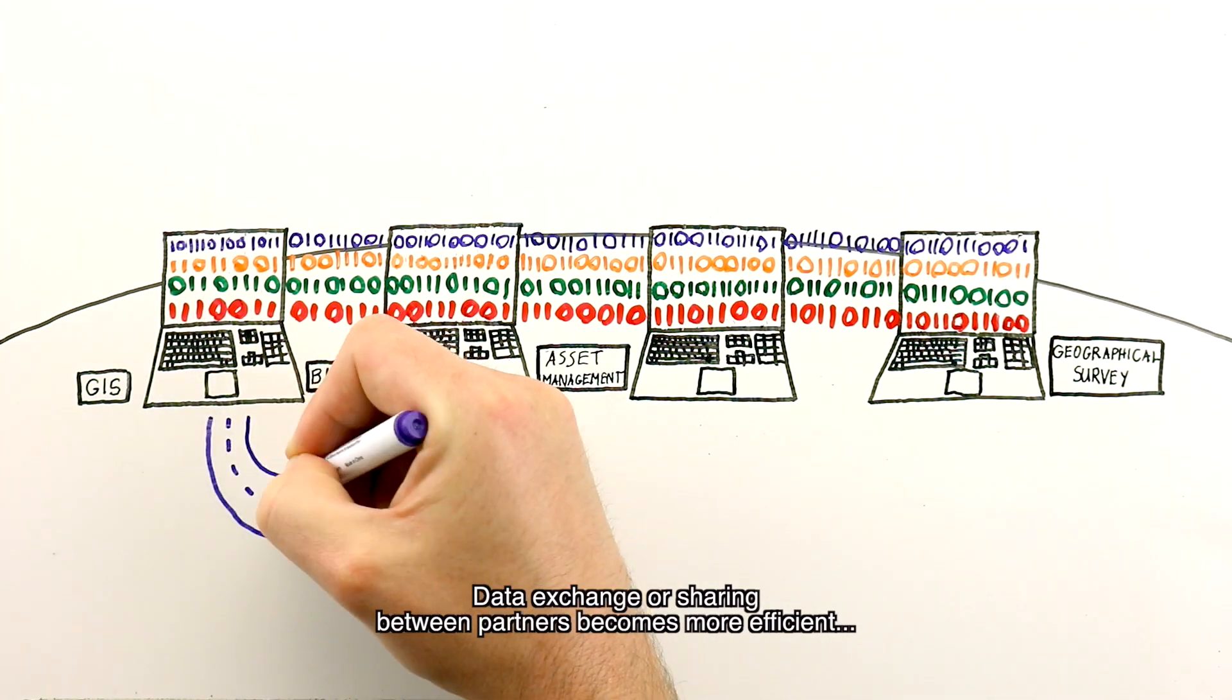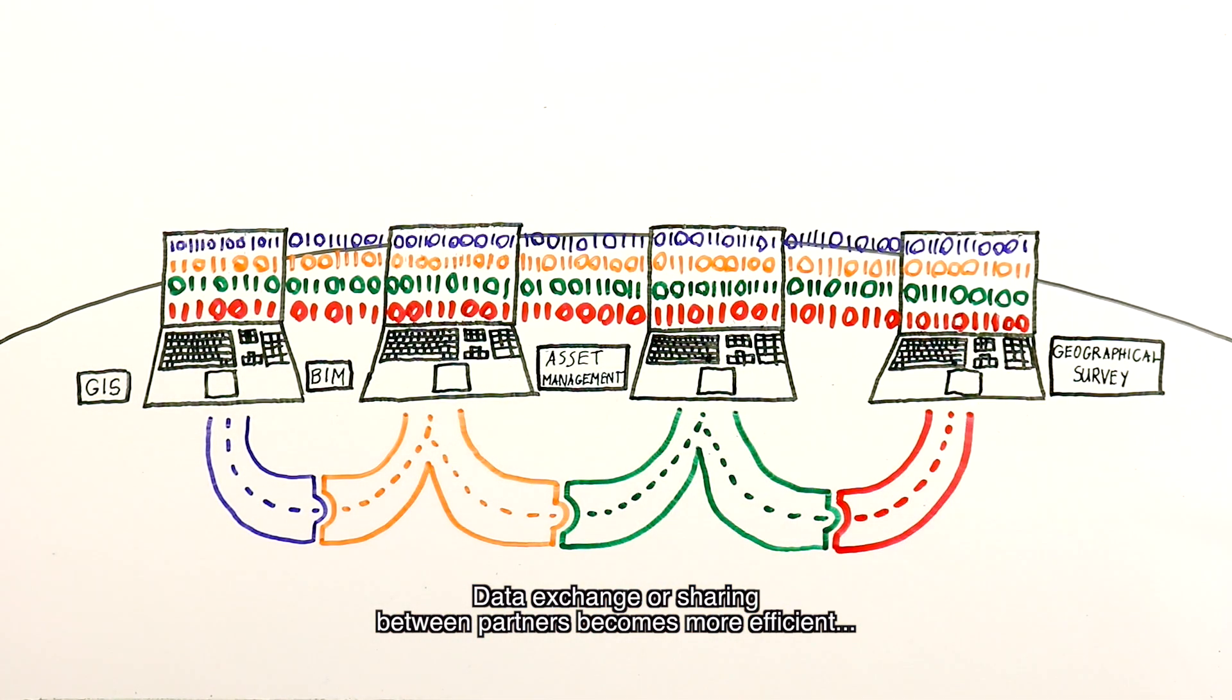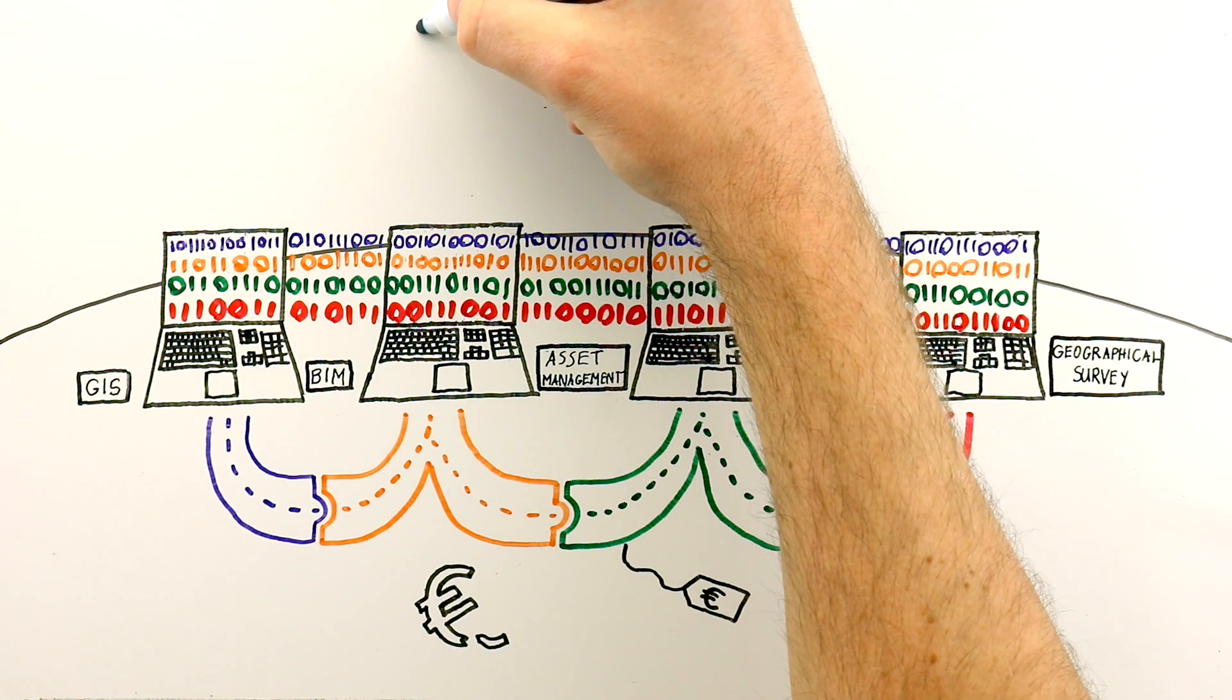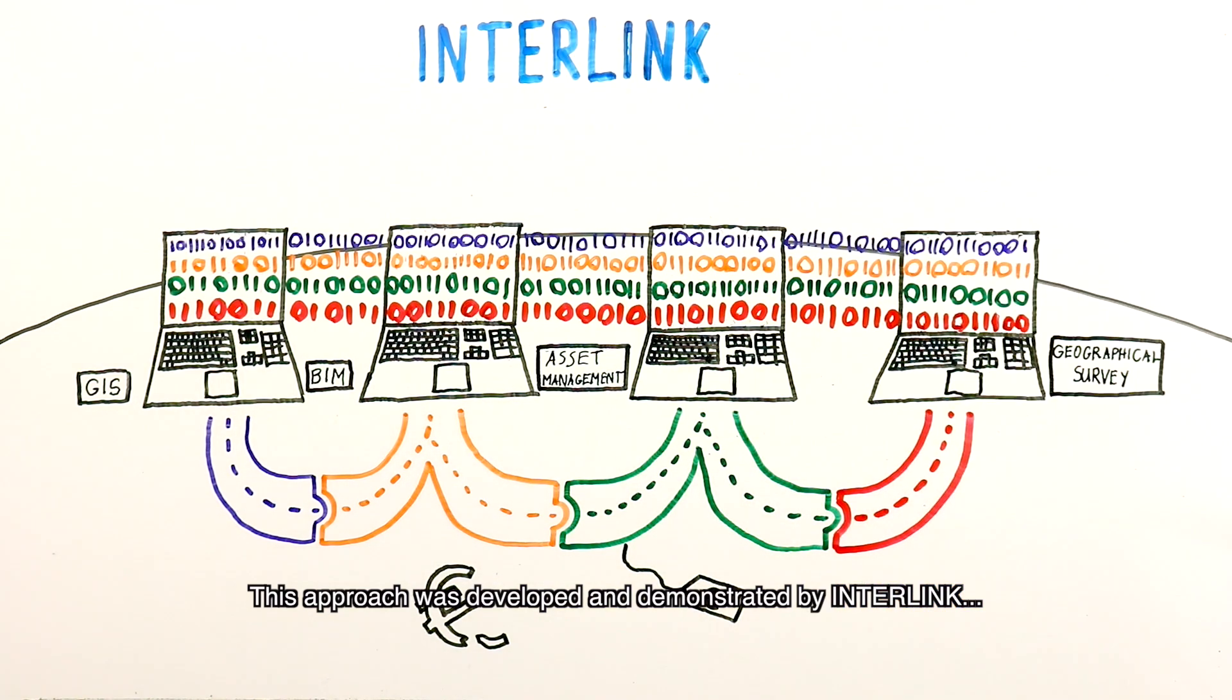Data exchange or sharing between partners becomes more efficient, which leads to fewer failure costs and better affordability of national roads. This approach was developed and demonstrated by Interlink, a consortium of market parties and research institutes focused on this issue.